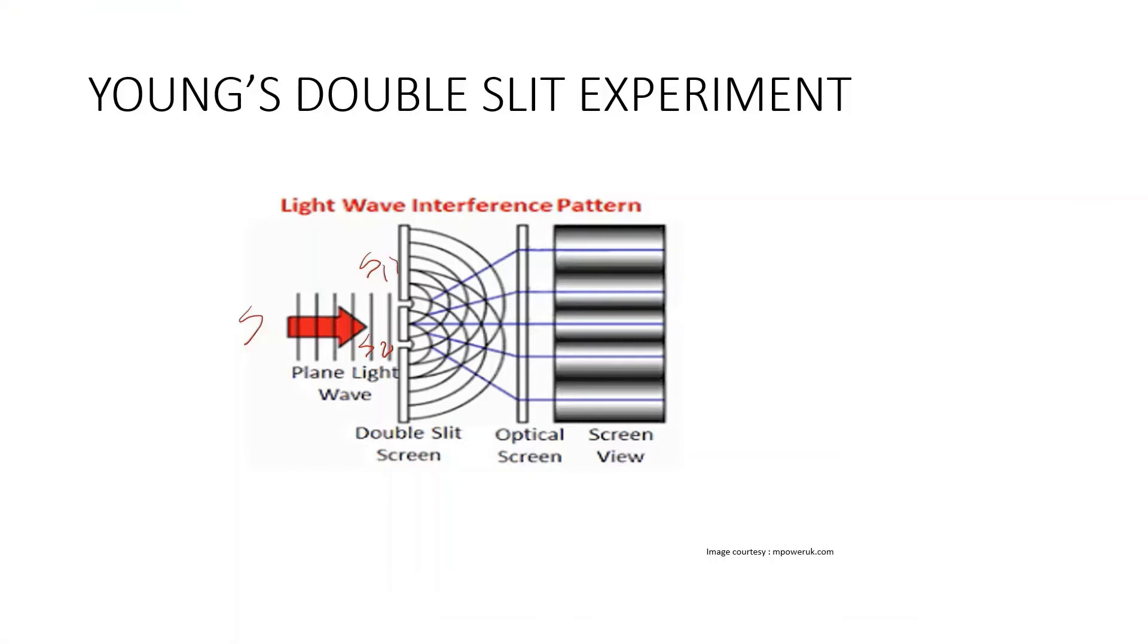In physics, two wave sources are perfectly coherent if their frequency and waveform are identical and their phase difference is constant. Laser light is an example of coherent source of light.